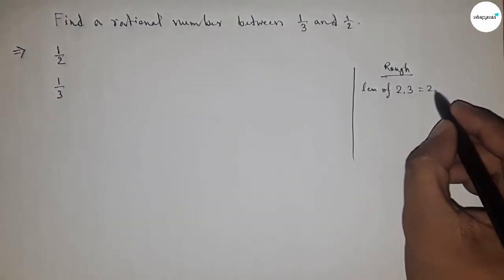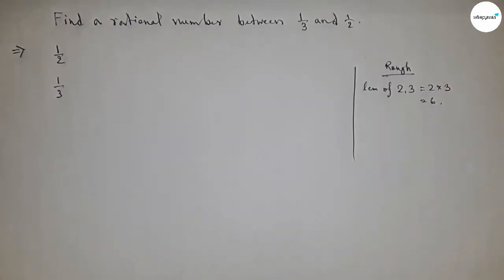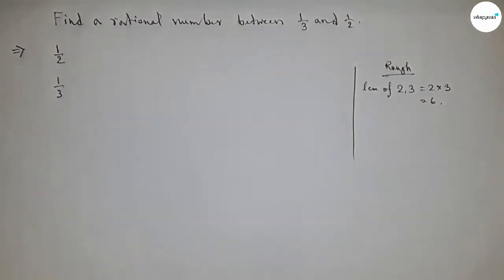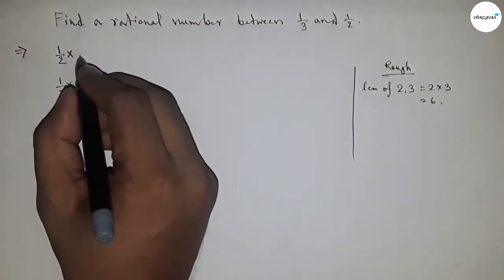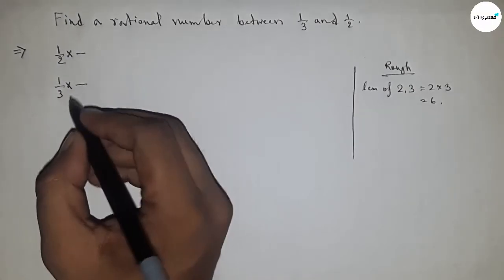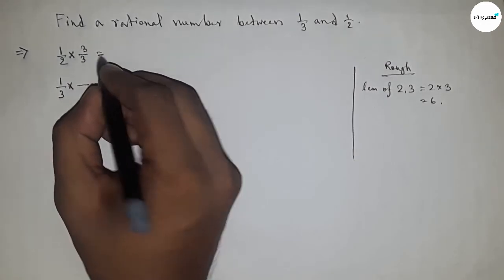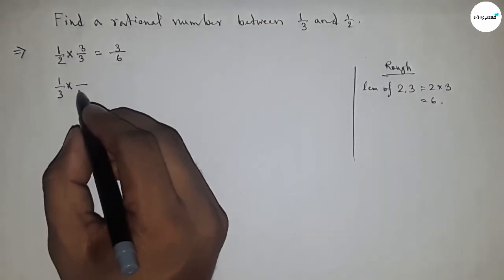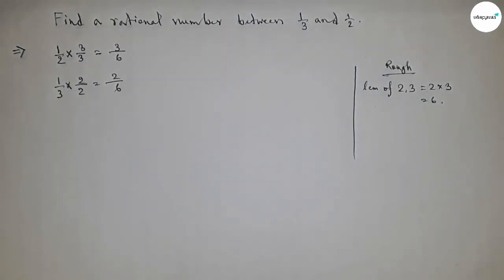The LCM of 2 and 3 equals 2 × 3 = 6, so we should make the denominator of both fractions 6. What should we multiply with both rational numbers to get denominator 6? Here multiply by 3, so this is 3/6. And here multiply by 2 up and down, so this is 2/6.